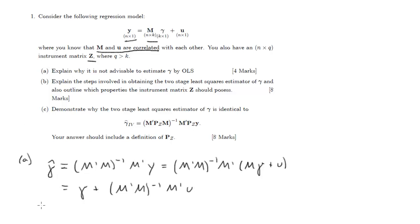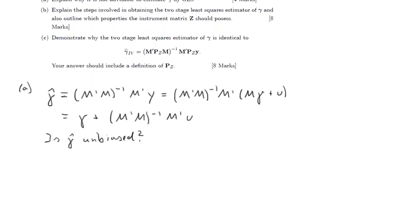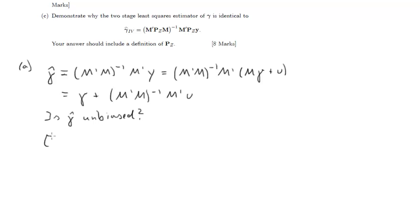And if we, for instance, ask the question: is gamma hat unbiased? To figure this out, what we need to establish is what the expectation of gamma hat is. Usually we would possibly do that conditional on M. That depends on the properties of whether M is random or not. Let's assume it is random. It's not specified here, so you could leave it as conditioning on M as well. But let's do that. The expectation of gamma is, of course, just gamma.